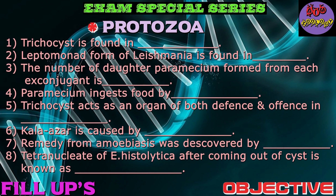Question number one: Trichocyst is found in? Correct answer: Paramecium. Next question: The leptomonad form of Leishmania is found in? Correct answer is Sandfly.